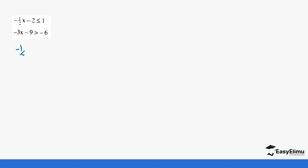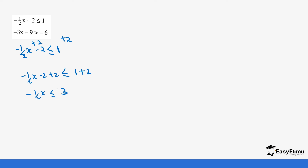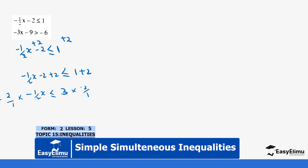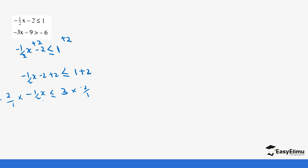Now an example with negatives. The first question is one-half x minus 2 is less than or equal to 1. We add 2 to both sides: one-half x is less than or equal to 3. We multiply by the reciprocal, which is negative 2 over 1. Since we are multiplying by a negative value, we change the sign, so x is greater than or equal to negative 6.